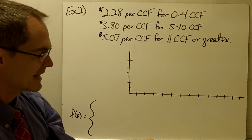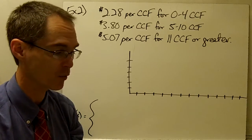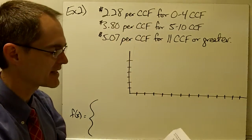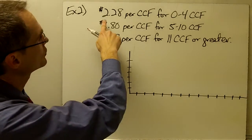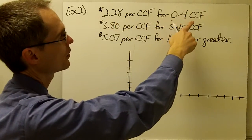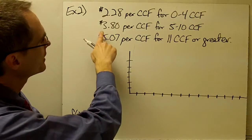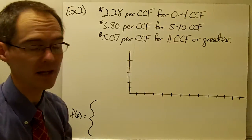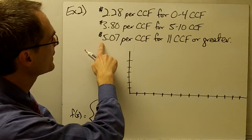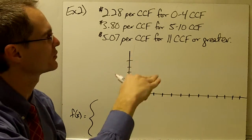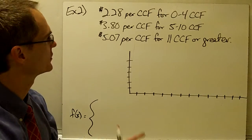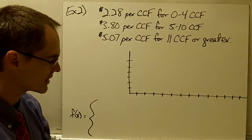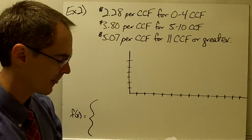Example number 2. The town of Garner's residential utility rates for water consumption are given as follows: $2.28 per CCF — CCF stands for 100 cubic feet — for your first four CCF. Then you're charged $3.80 per CCF for the next 5 to 10 CCF that you use. And then you're charged $5.07 per CCF for 11 or greater. This is called a tiered rate model: the less water you use, the less you pay, and the more you use, the more you pay. We want to express the function using bracket notation and then graph it.